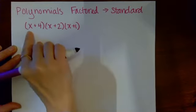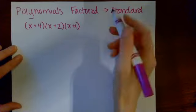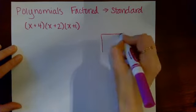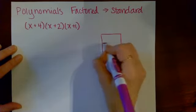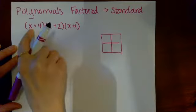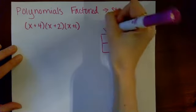So to start, I'm going to multiply the factor x plus four by the factor x plus two. I'm going to make an area model that's a two by two square. There are two terms, x and 4, x and 2, in each factor.